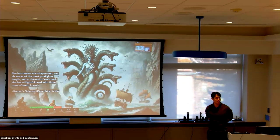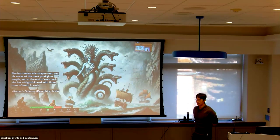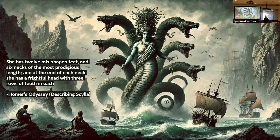For those who haven't read the Odyssey or forgot about it: Scylla is a monster. She has 12 misshapen feet and six necks of the most prodigious length, and at the end of each neck she has a freckled head with three rows of teeth. I'll talk about how this relates to LLMs.